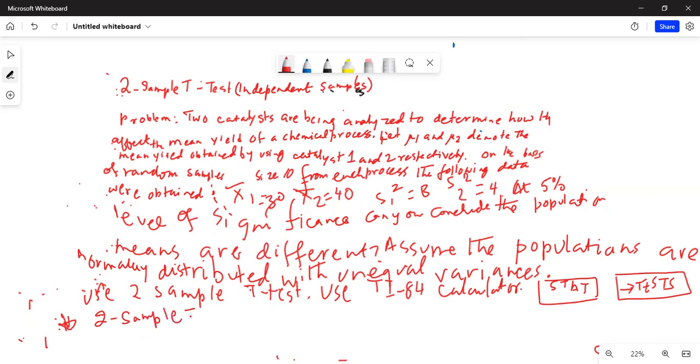On the calculator screen, stat test, and we scroll down to two sample t-test, not z-test, and then the input should be on stats because we know the summary stats.